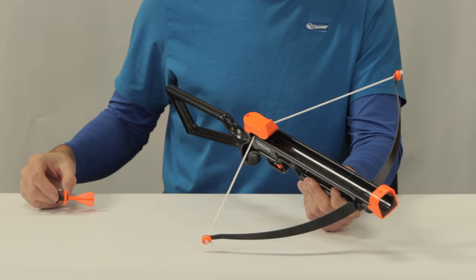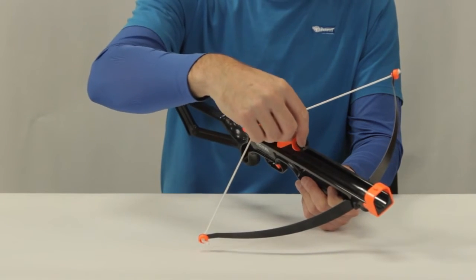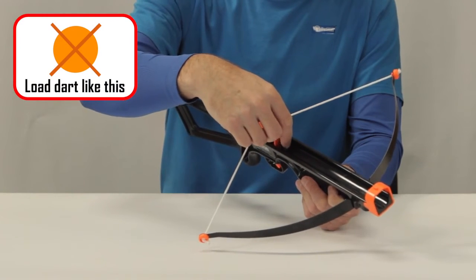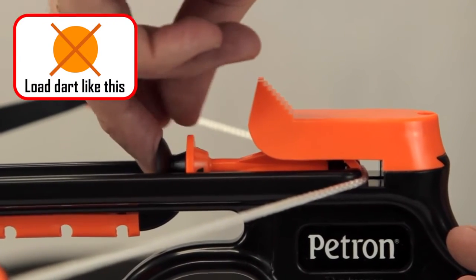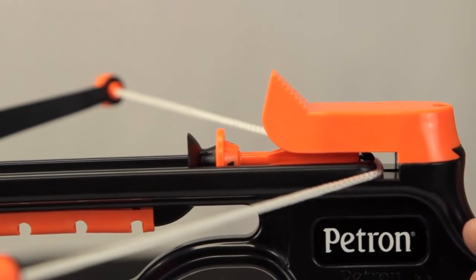We are now ready to load the bow. Insert a Petron sucker dart underneath the rear sight with the fins and the neck like this, and push the dart fully back so the safety mechanism is released. The bow is now ready to shoot.